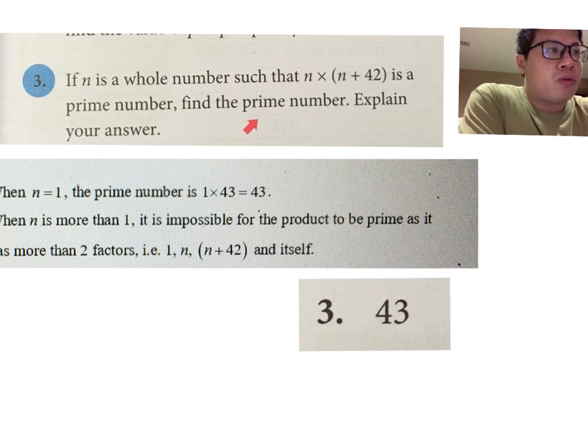The idea is that if you're talking about a prime number, the number itself will only consist of two factors: one and itself.